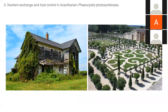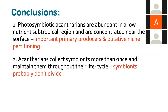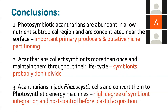Instead of letting symbionts run amok and potentially take over the host, the hosts very carefully and finely control symbionts, manipulating their symbiont garden. In summary for the whole thesis: photosymbiotic acantharians are abundant in low-nutrient subtropical regions, concentrated near the sea surface, making them important primary producers showing niche partitioning. Acantharians collect symbionts more than once and maintain them throughout their life cycle, showing symbionts probably cannot divide inside hosts. These acantharians are hijacking Phaeocystis cells and converting them into photosynthetic energy machines, indicating a high degree of symbiont integration and host control even before the more-understood steps of plastid acquisition.